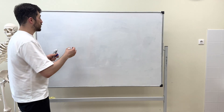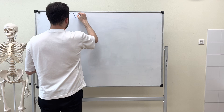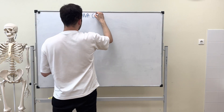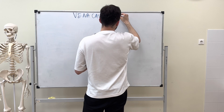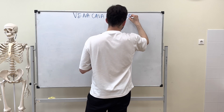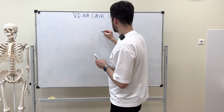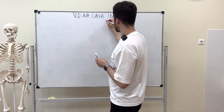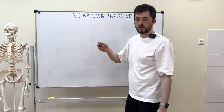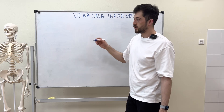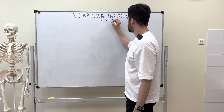Let's start with the vena cava inferior. Who can tell me about it? Where does it start? Yes, it's the largest vein in our body. It starts at the level of L4 to L5 vertebrae.